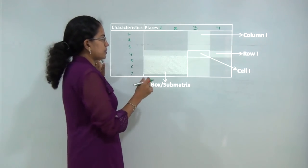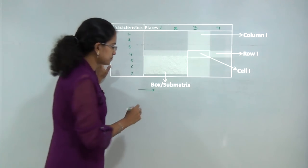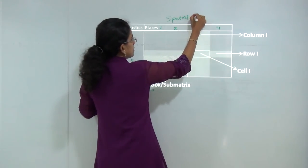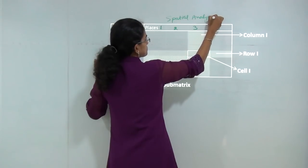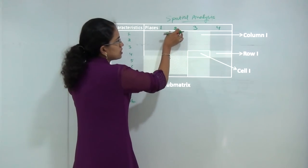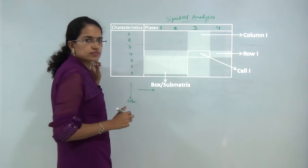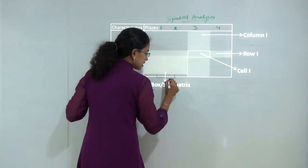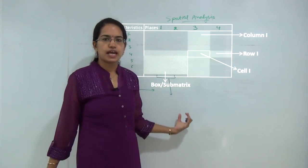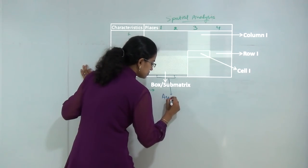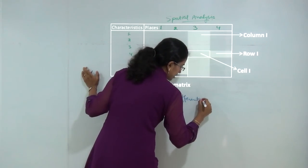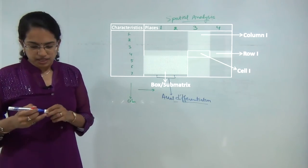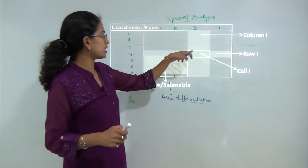The horizontal elements are the rows and the vertical elements are the columns. Under spatial analysis, what Berry tried to explain was these columns differ from one another, the only reason being they are different places. Since they are different places, if I want to compare place A with place B I could call it a case of aerial differentiation, because they are different areas. That is an example of aerial variation.